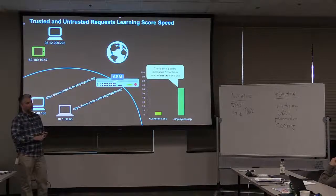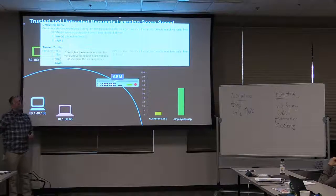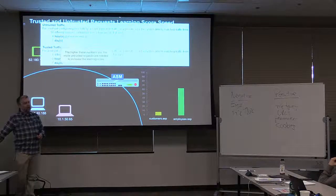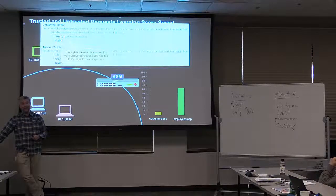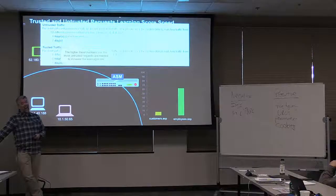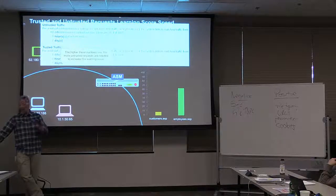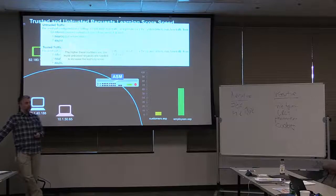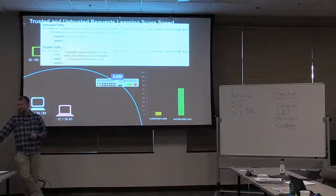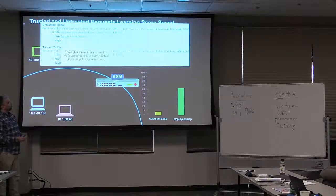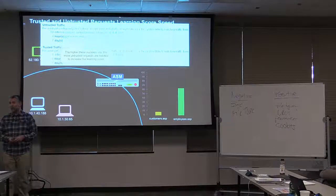You adjusted the learning score speeds. There are two categories: untrusted versus trusted. The numbers are much higher for untrusted requests. For example, to make any movement in the learning score for untrusted requests, it takes 50 different requests from different people in different sessions within an hour. Whereas from a trusted source, all it takes is one request from a unique user. The higher those numbers, the more requests needed to make learning score adjustments.